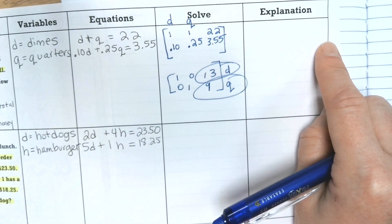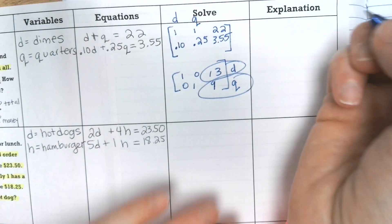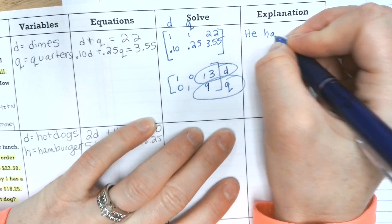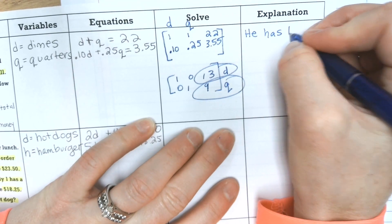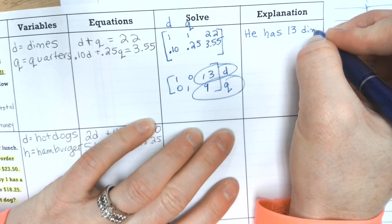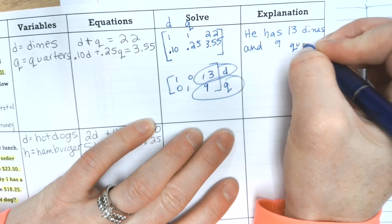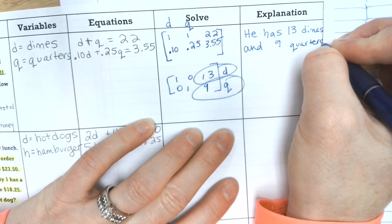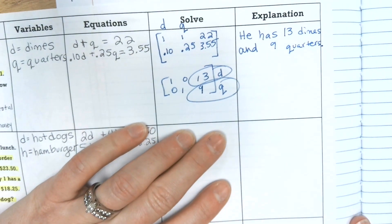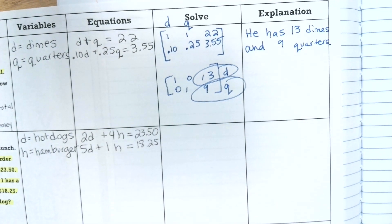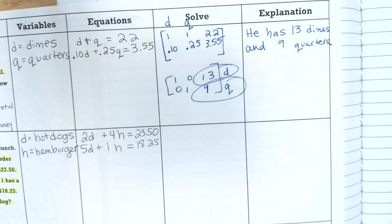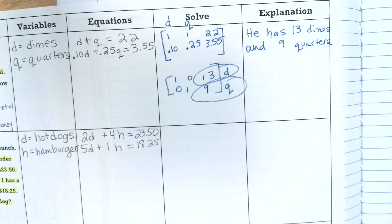So what we are going to do is write the answer, but we need to write it in words. So the question was, how many dimes does he have? How many quarters does he have? He has 13 dimes and 9 quarters. So usually with word problems, you have to write your answer in words. So that's why I do that instead of just d equals 13 q equals 9.